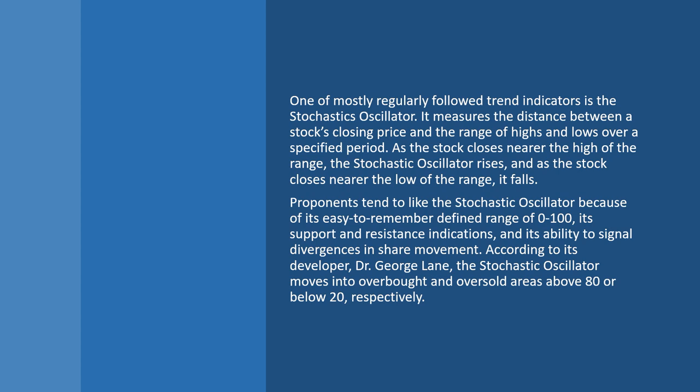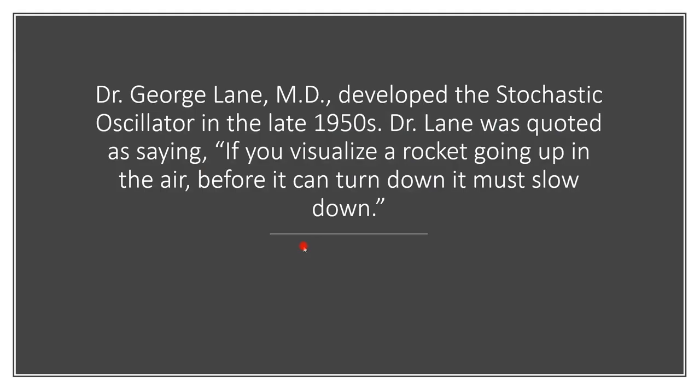When it goes above 80, before it reaches 100 and can't go any farther, it's telling us the asset is overbought. When it goes below 20, it's telling us the asset is oversold. We can customize these fences — making them 75 and 25, or 70 and 30 — but the 0 and 100 are permanent. I use the word overbought and oversold, not buy and sell, because an asset that is overbought can remain overbought, and an asset that is oversold can remain oversold.